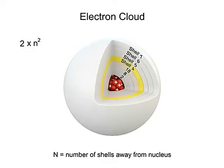And for the fourth shell, it would be 2 times 4 squared, or 2 times 16, yielding 32 electrons, and so on.